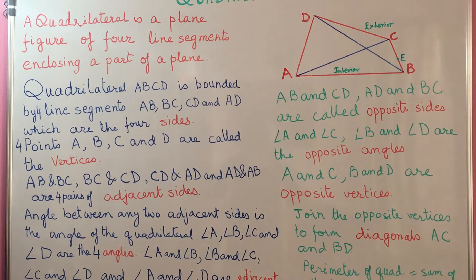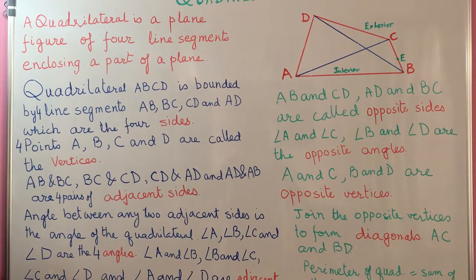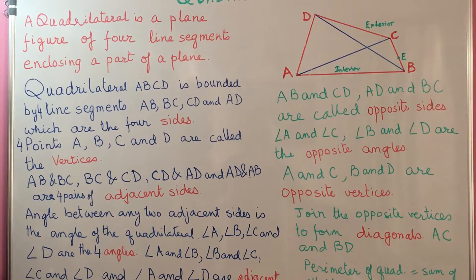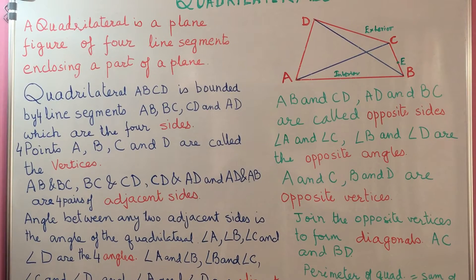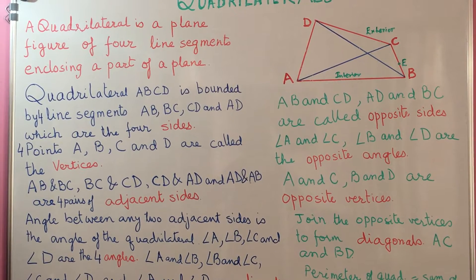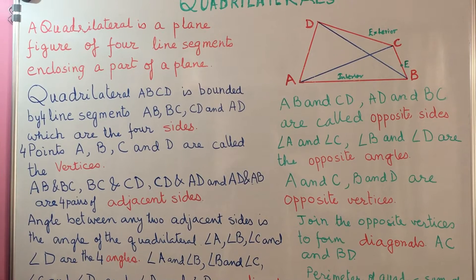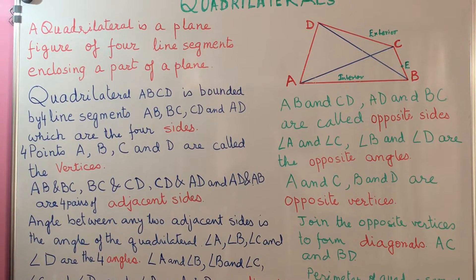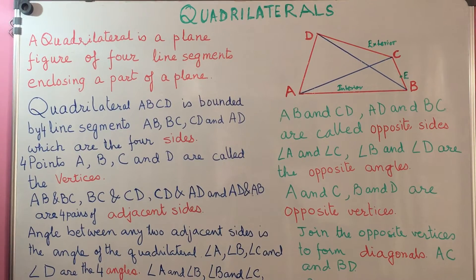Now the sides AD and AB intersect at A, so A is a vertex of the quadrilateral. In the same way, sides AB and BC intersect at B, so B is another vertex.